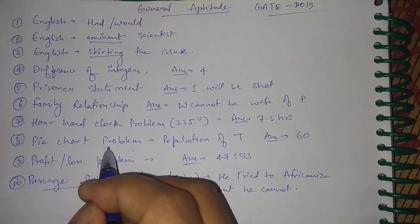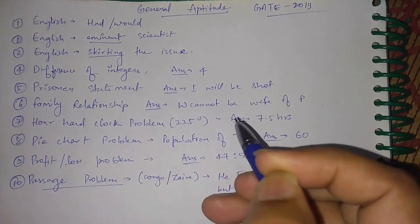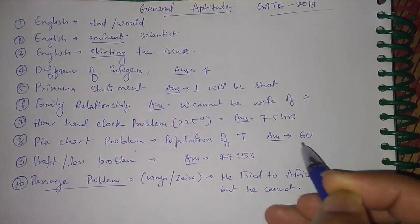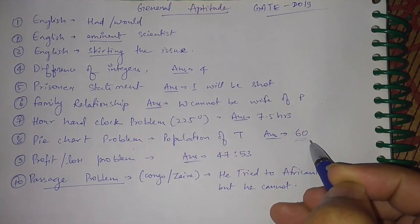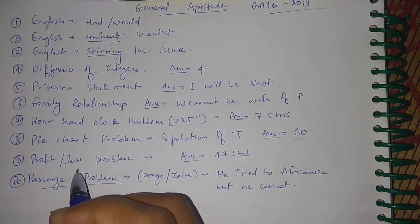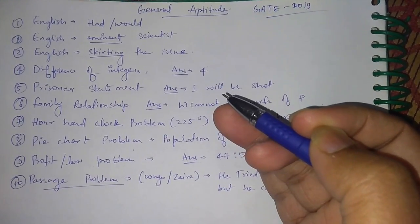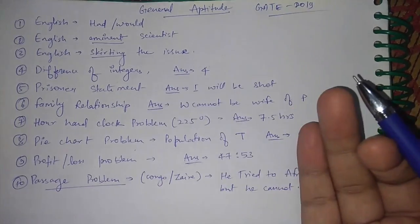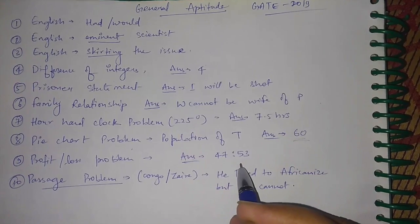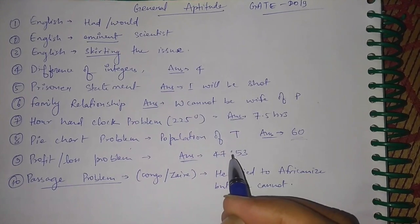There was a problem on a pie chart involving the population of regions P, Q, R, S, T, asking how much the population of T increased from 2010 to 2016 — the answer should be 60. Then there was a profit and loss question where when he interchanges the price of two items, the answer for the profit ratio will be 47:53, which I think was option C.